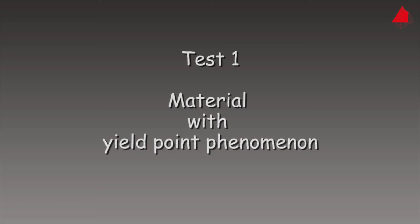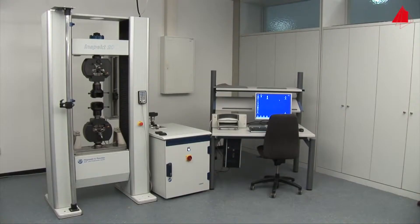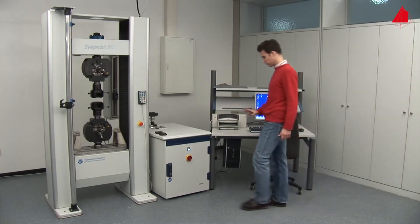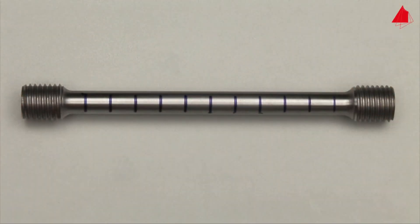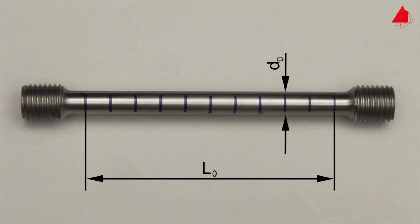The tensile test: first test material with yield point phenomenon. In the first tensile test, a plain carbon steel with yield point phenomenon is to be tested. This is the test piece. It has a cylindrical test region with an original diameter of 10 millimeters and an original gauge length of 100 millimeters. Within this test region, distance marks have been drawn at regular intervals. They help to visualize and measure the plastic behavior of the specimen.